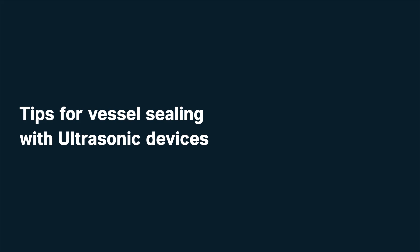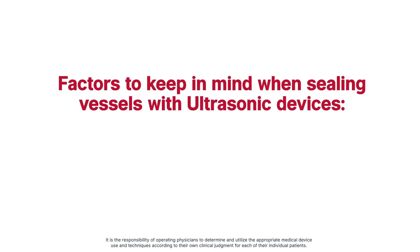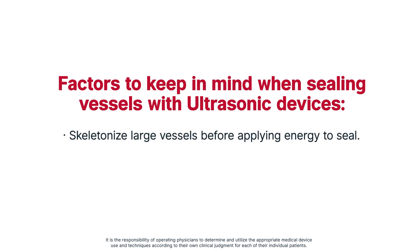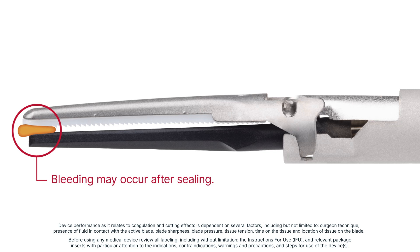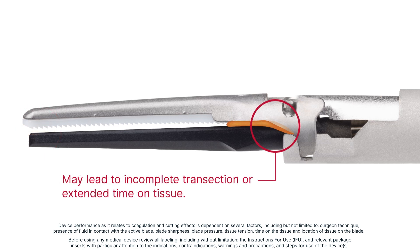Tips for vessel sealing with ultrasonic devices. Important factors to keep in mind: skeletonize large vessels before applying energy to seal. Verify that the vessel is fully captured and placed at the center of the blade. If the vessel is sticking out beyond the tip of the blade, bleeding may occur after sealing. If the vessel is wedged in the crotch of the jaw, it can extend behind the tissue pad and may result in an incomplete tissue effect, leading to incomplete transection or extended time on the tissue.